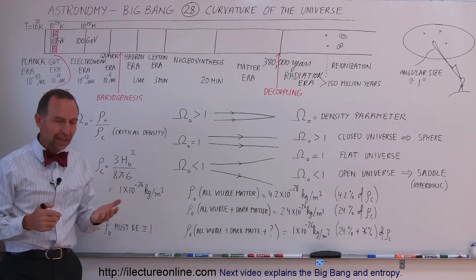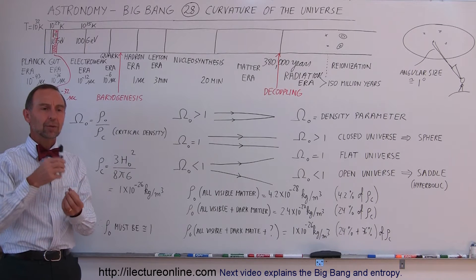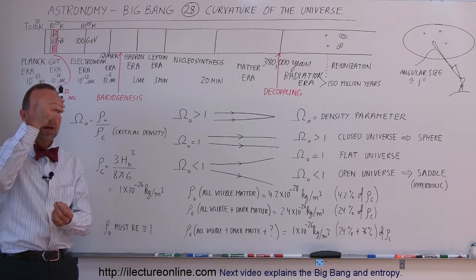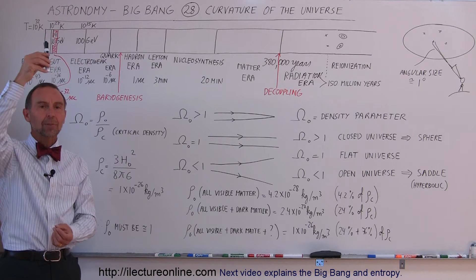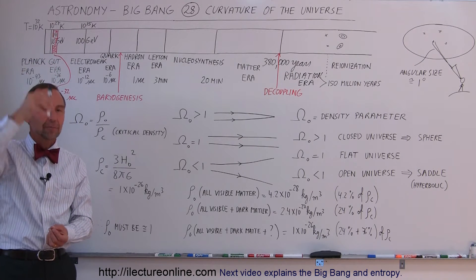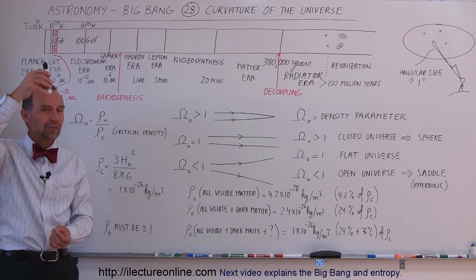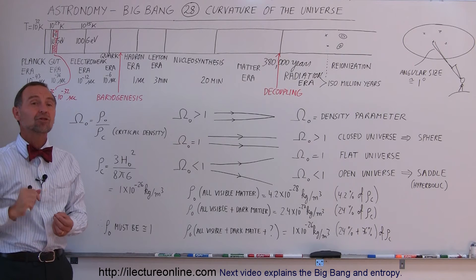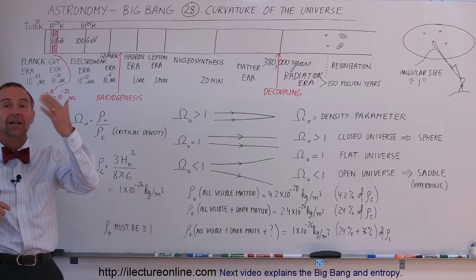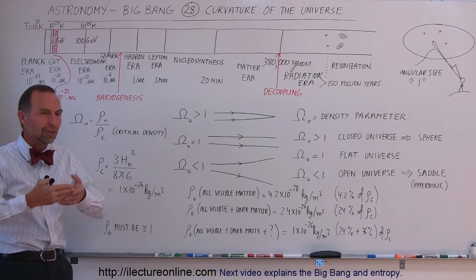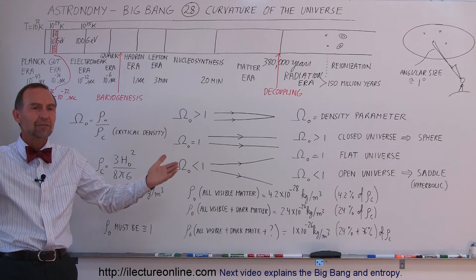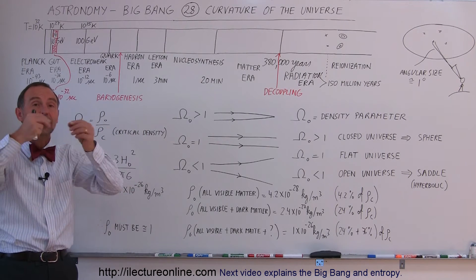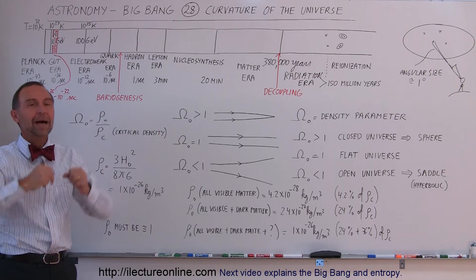In a flat universe, it's kind of like leaving the earth in a rocket moving at escape velocity. It would slow down, but never quite come to a stop and fall back to earth. It would always keep moving farther and farther away, even though the speed may be slower — it would never stop until it reaches infinity. So in a flat universe, the expansion would continue basically forever, never slowing down to the point where it would stop and fall back together again.